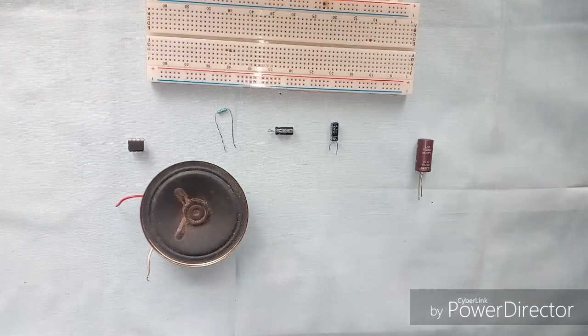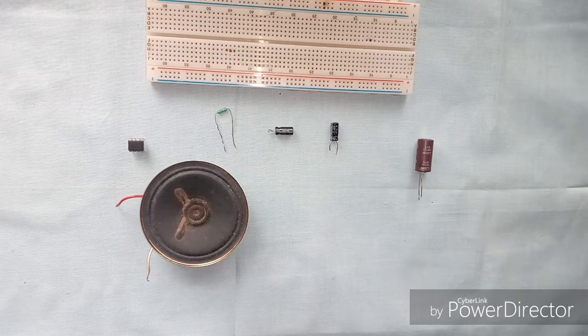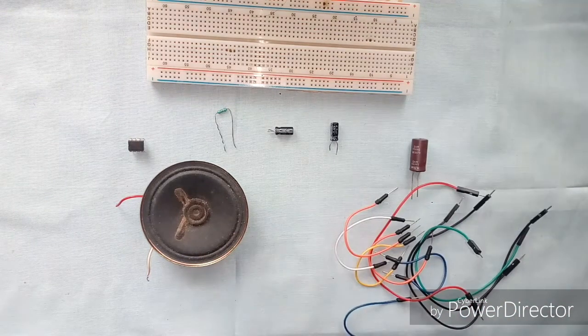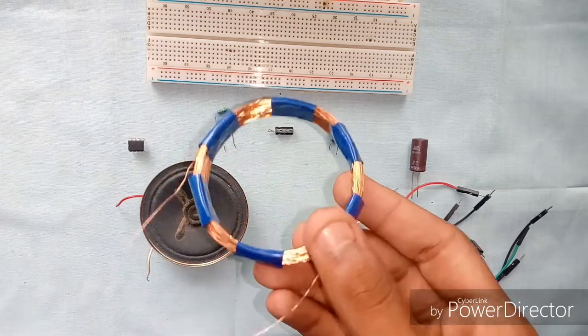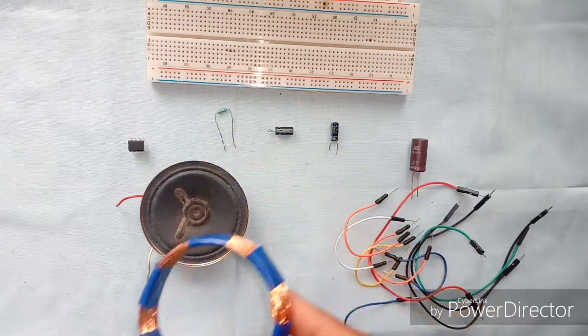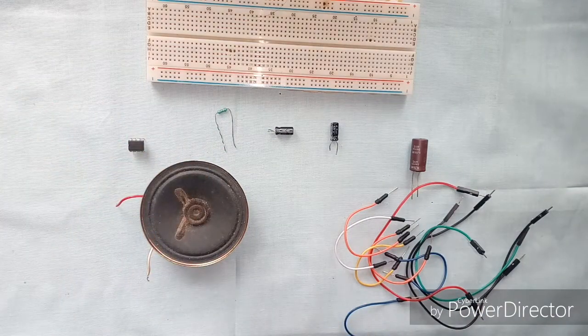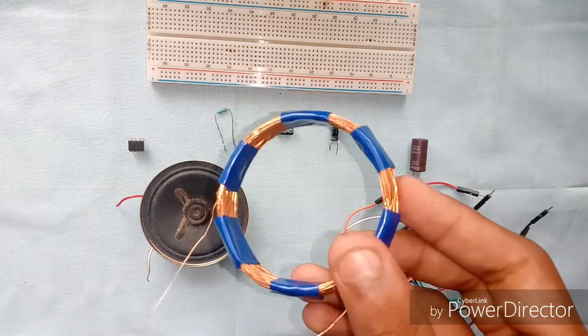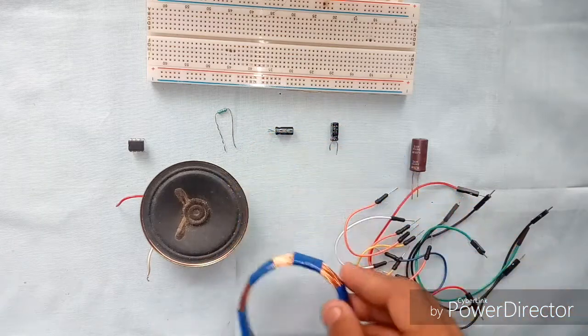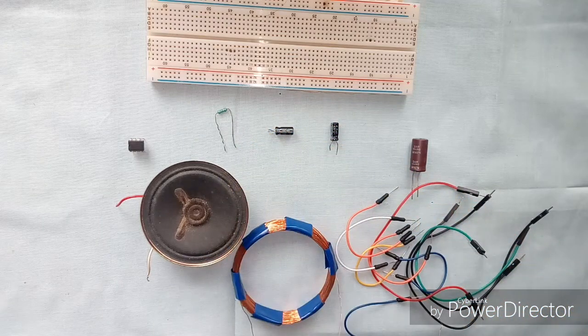Also you will need a speaker, small speaker or any speaker will be best, some jumpers and a coil. So this coil is made from a thin copper wire which I found inside an old TV in such a shape, and this coil contains at least 200 to 300 turns. Let's get started with the build.